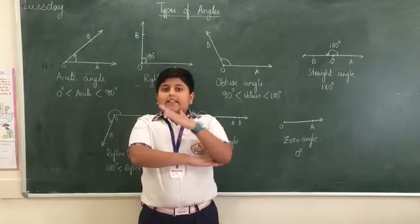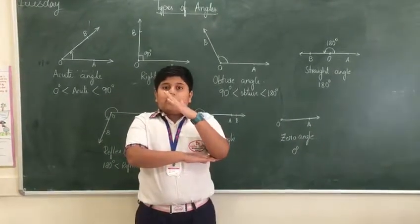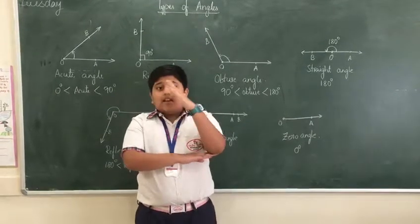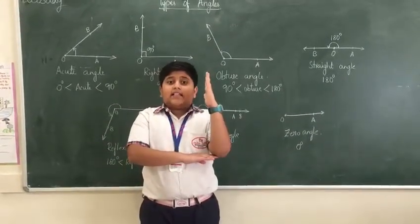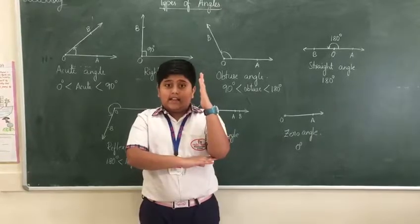The first angle is acute angle. It is more than 0 degrees but less than 90 degrees. The second angle is right angle which measures exactly 90 degrees.